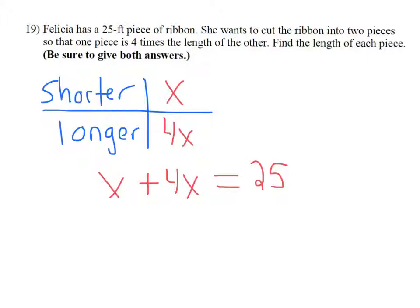Now, simplify this equation before we solve it. x plus 4x is 5x. I'm left with the equation 5x equals 25. This is a one-step equation. I have 5x equals 25 or 5 times x equals 25. I undo 5 times x by dividing both sides by 5. This leaves me with x equals 25 divided by 5 is 5.